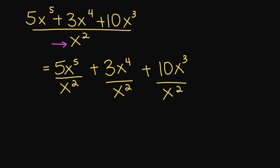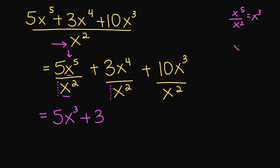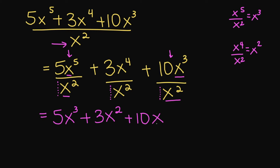We're dividing each term by our monomial, which is x squared. 5 divided by our imaginary one gives us 5, and x to the fifth divided by x squared gives us x cubed. Then 3x to the fourth divided by x squared: 3 divided by 1 is 3, and x to the fourth over x squared gives us x squared. For the last term, 10 divided by 1 is positive 10, and x cubed over x squared gives us x. So your final answer is 5x cubed plus 3x squared plus 10x.